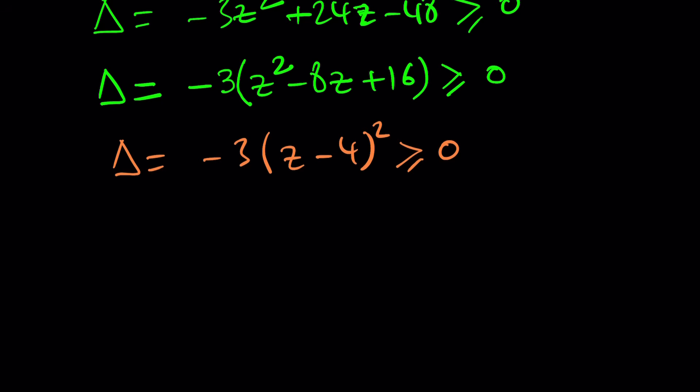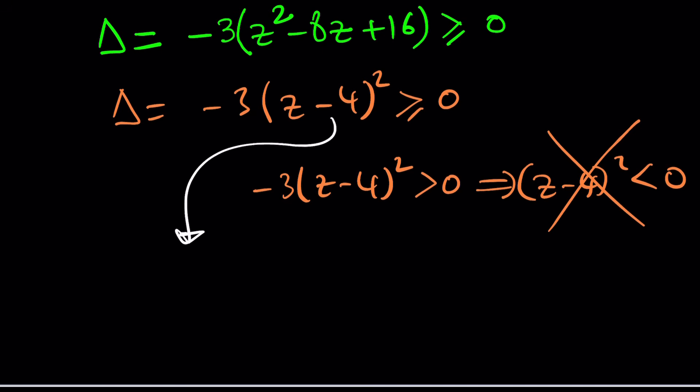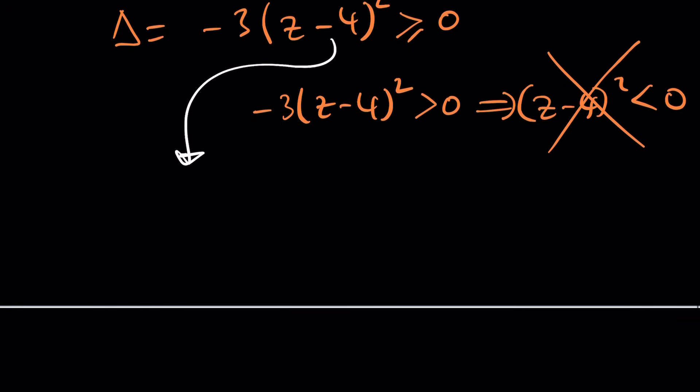So this expression cannot be greater than zero. Because that would imply if this is, let me just show you proof by contradiction. If this is positive, then z minus 4 squared needs to be negative. Which is impossible. Contradiction. So it can't be positive, which means it has to be zero. You only have one choice. This is the beauty of it. We're solving an equation using an inequality. Isn't that awesome? So now this means z minus 4 squared equals zero, which means z is equal to 4. Beautiful.